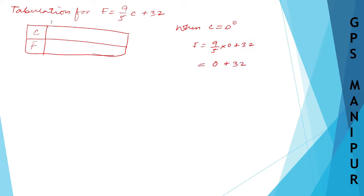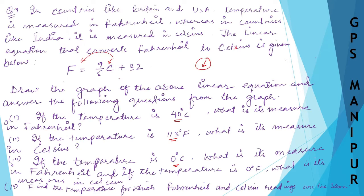So when C is 0, Fahrenheit is 0 + 32, which is 32. So F = 32 when C = 0. Next, let us take C = 40.